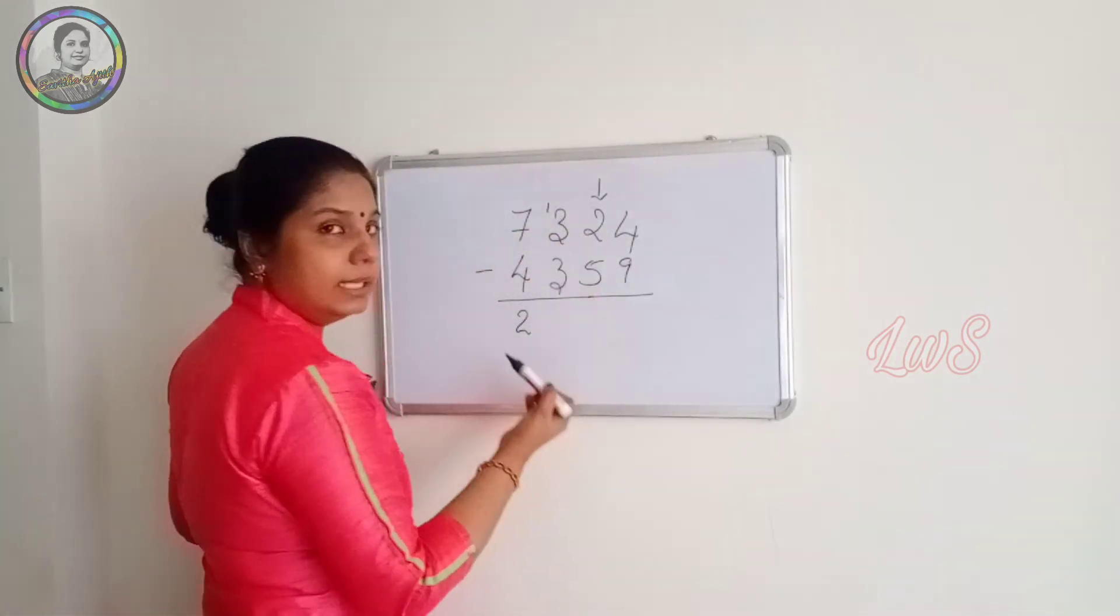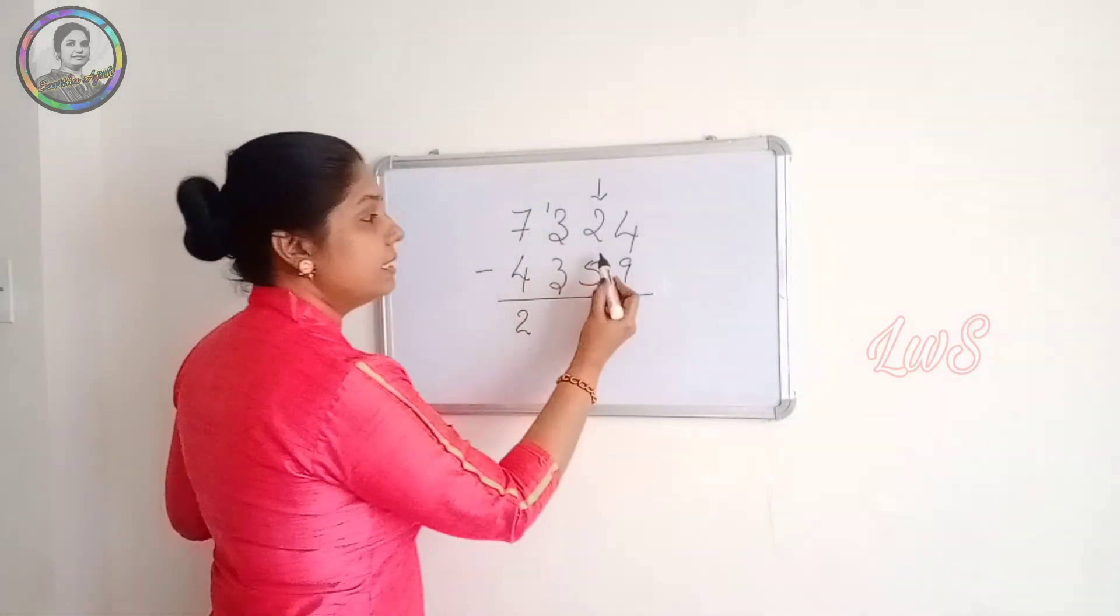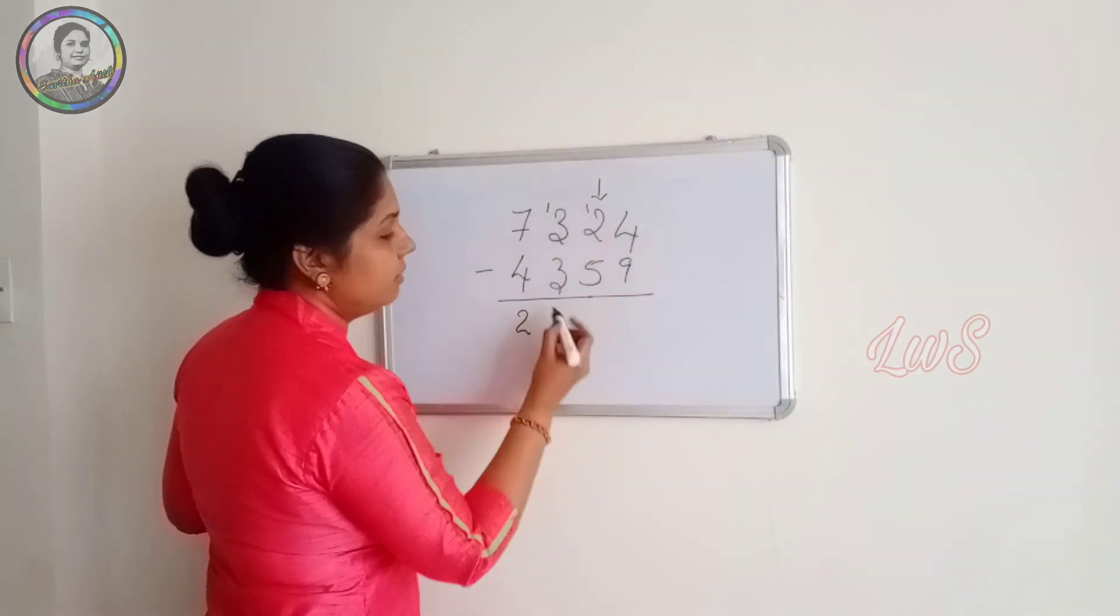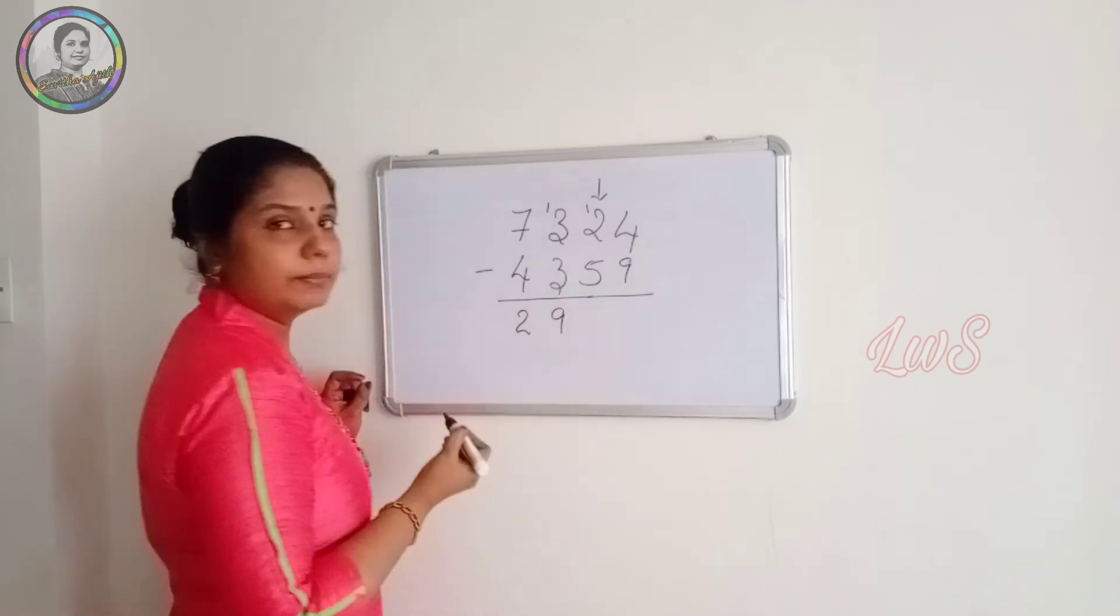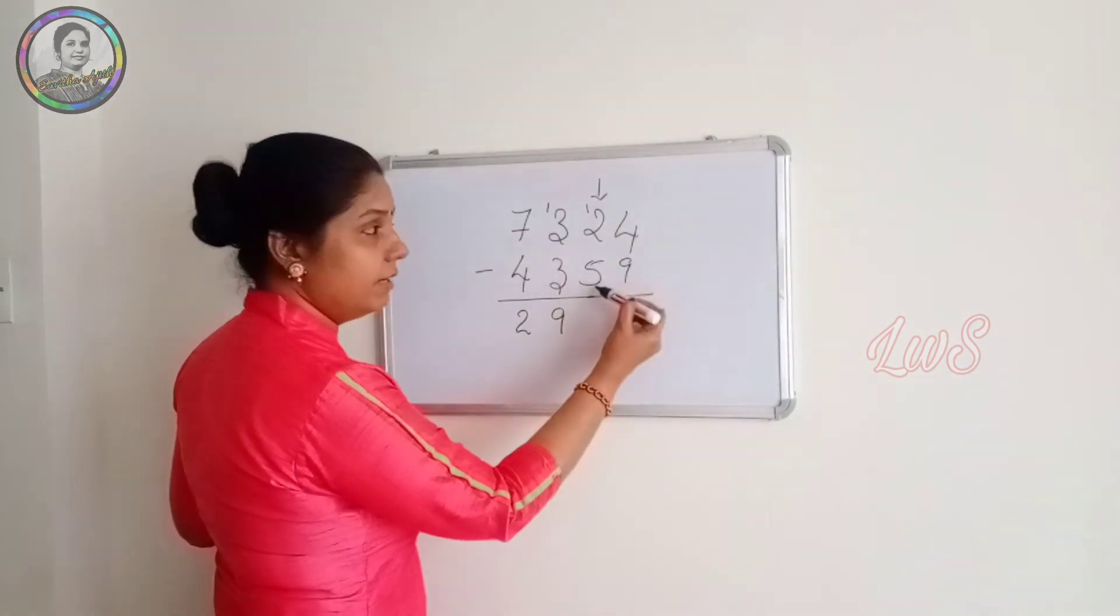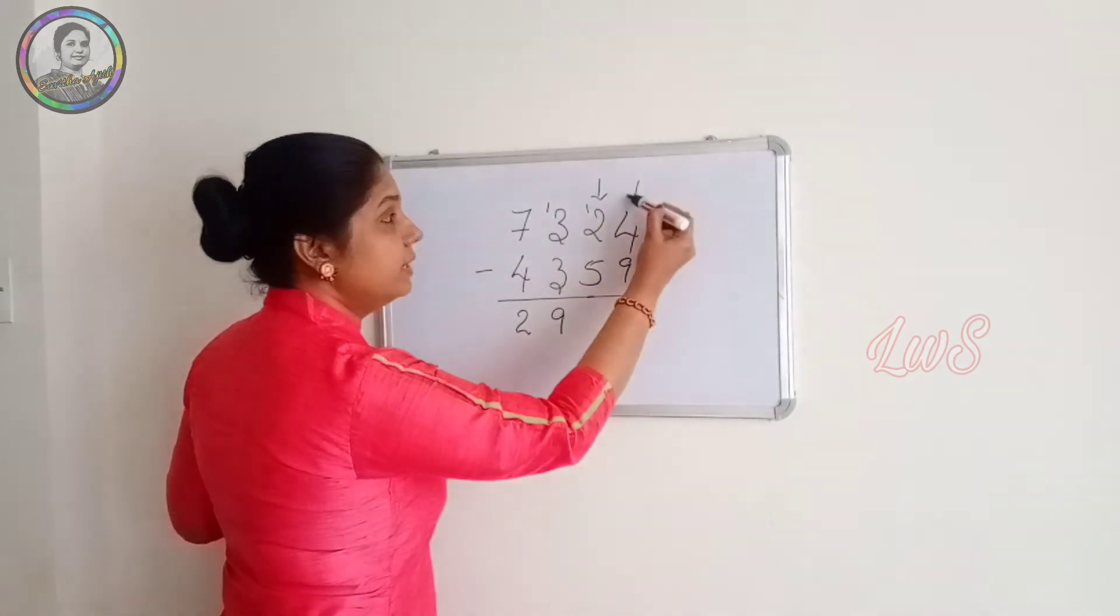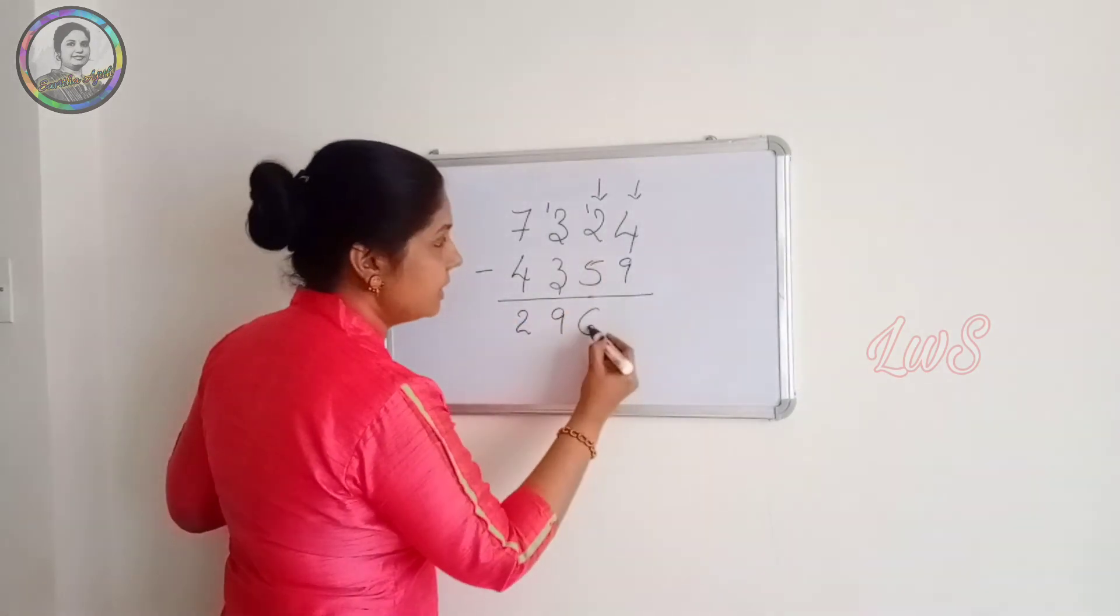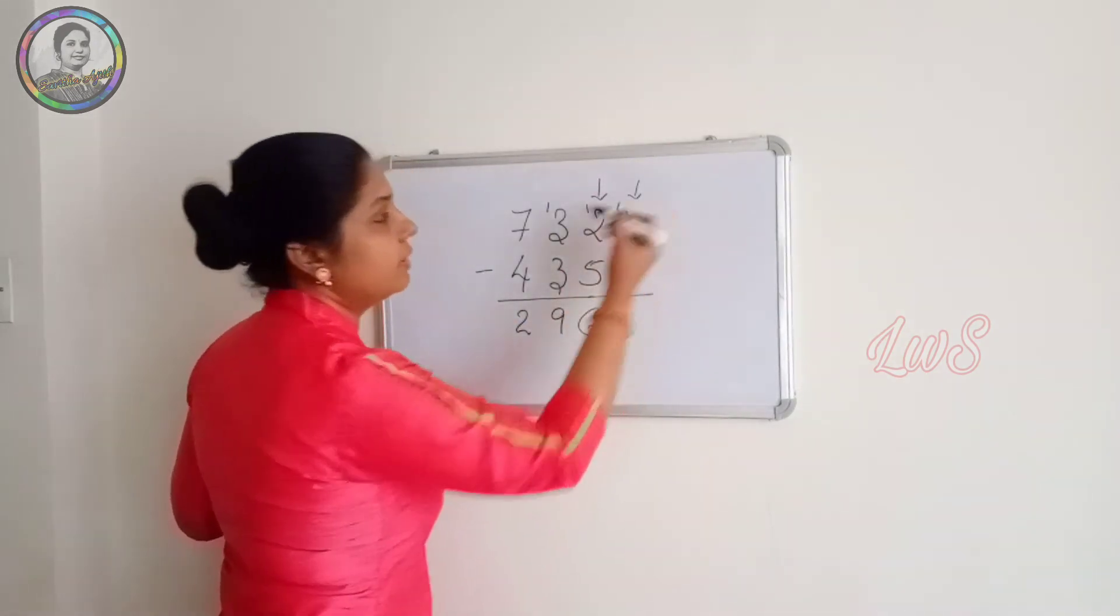But since we have to give 1 for the neighbor, we write 10 minus 1, 9 here. 12 minus 5 is 7. But look for the neighbor. He wants that 1. So write 6 here. And give that 1 to the neighbor.